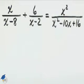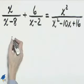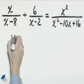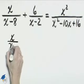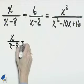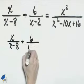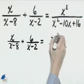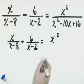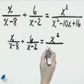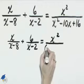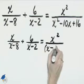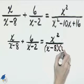First, we need to factor x squared minus 10x plus 16. We have x over x minus 8 plus 6 over x minus 2 equals, and on the right hand side, x squared minus 10x plus 16 factors into x minus 8 times x minus 2.